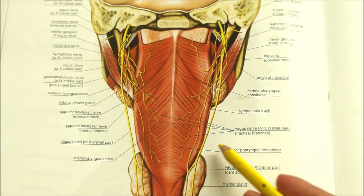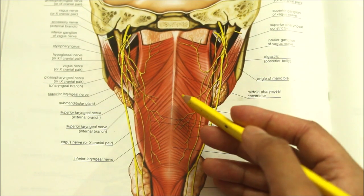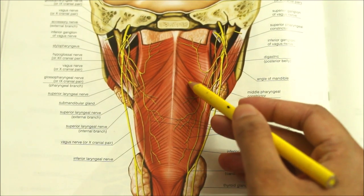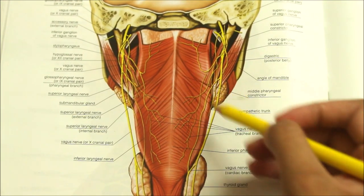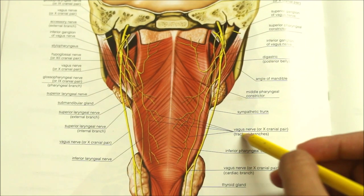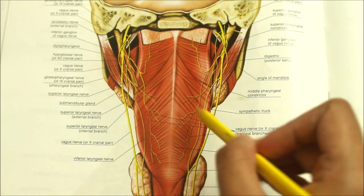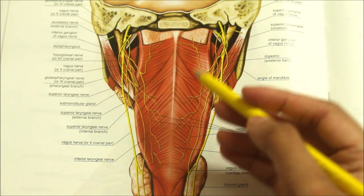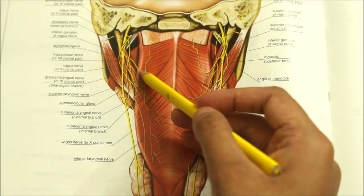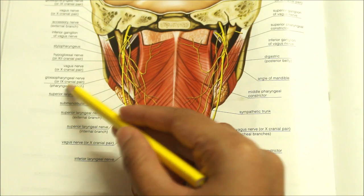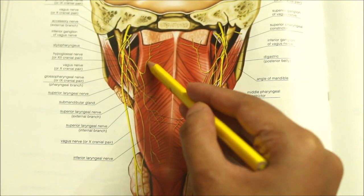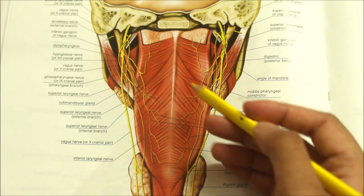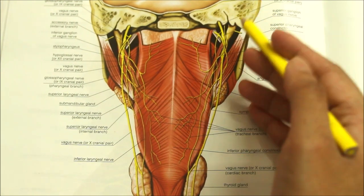Now let's look at the nerve supply of the pharynx. The pharynx is supplied by the pharyngeal plexus of nerves, which lies chiefly on the middle constrictor. The plexus is formed by the pharyngeal branch of the vagus nerve, the pharyngeal branches of the glossopharyngeal nerve, and the pharyngeal branches of the superior cervical sympathetic ganglion.